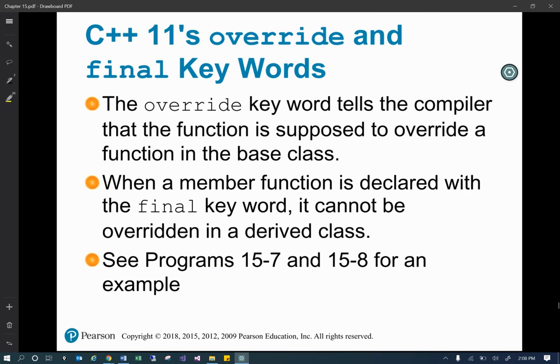Now when we hit C++11, the override and final keywords. In this we've got the override keyword which tells the compiler that the function is supposed to override a function in the base class. And then we've got the member function declared with the final keyword, and it cannot be overridden in the derived class. So take a look at programs 15-7 and 15-8 for an example. You'll make use of override and final quite a bit.